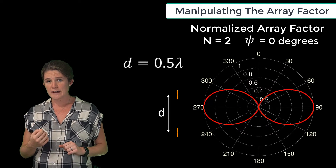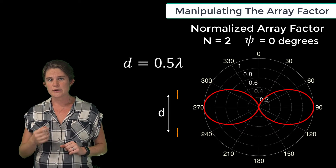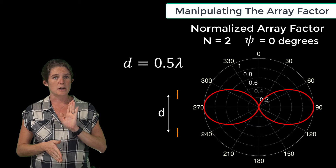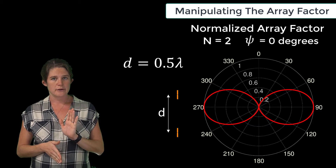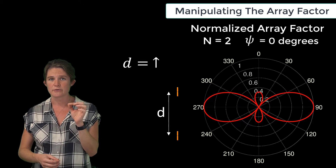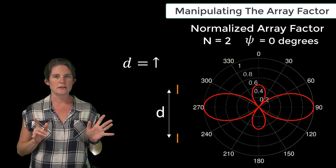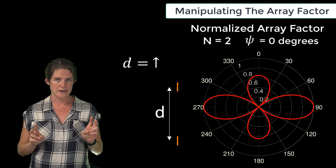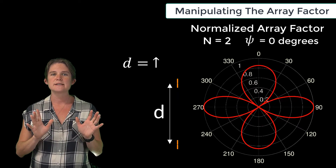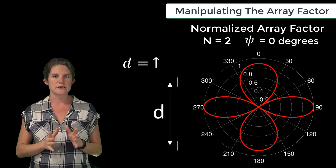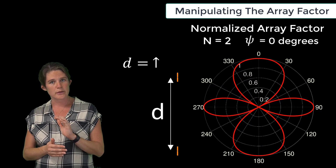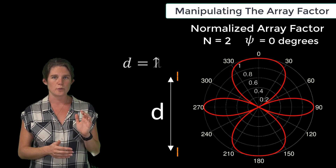At d equals half wavelength, we see very clean broadside radiation with zero radiation upward or downward. As d increases past half wavelength, we start to see secondary lobes forming in the end-fire direction — straight up and straight down. These secondary lobes continue to increase in strength as d varies from half wavelength up to a full wavelength.